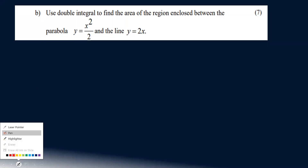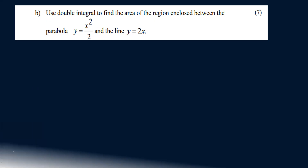Use a double integral to find the area of the region enclosed by the parabola y equal to x squared by 2 and the line y equal to 2x.